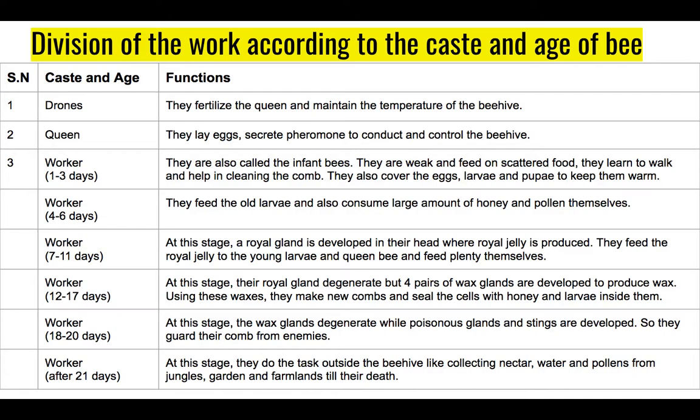When the worker bee reaches seven to eleven days old, the royal gland develops on the head. This gland helps produce royal jelly, which is a special food fed to larvae. Worker bees at this stage feed royal jelly to young larvae and the queen bee.